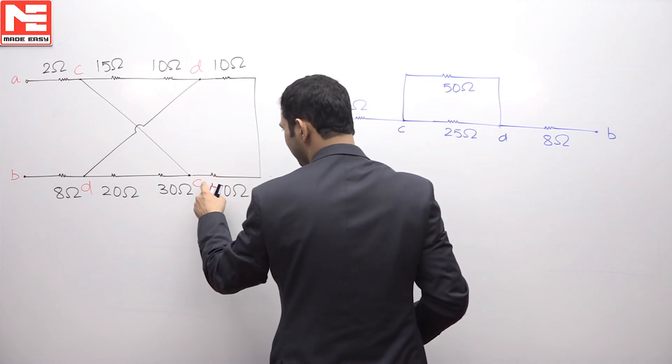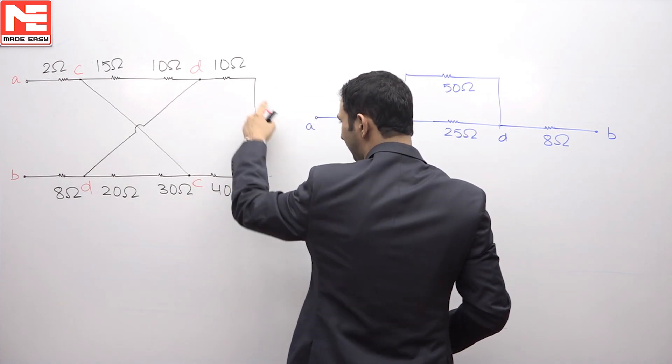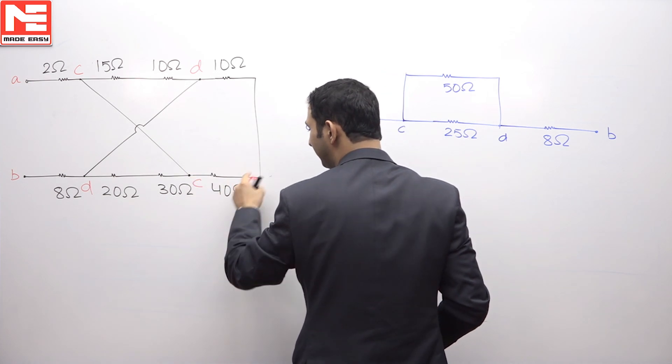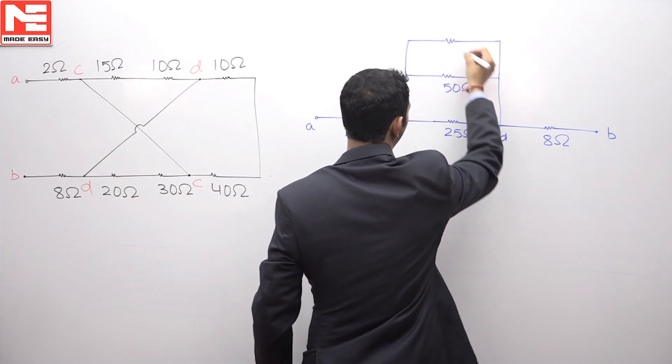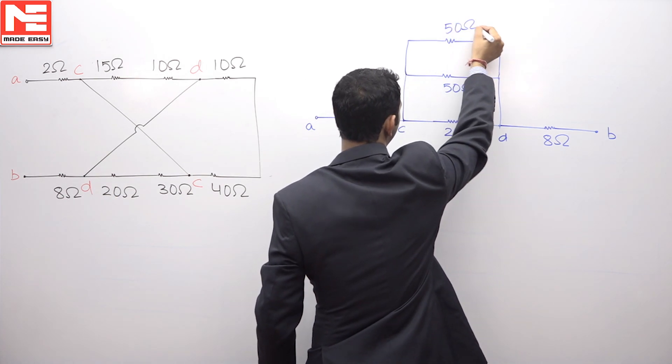Now this resistance is left. Again they are connected in series, that is 10 plus 40 is 50, and they are again connected between C and D. That is C and D, again we have 50 ohms.